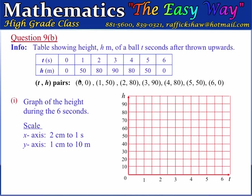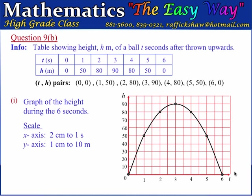From the table, our ordered pairs are: (0, 0), (1, 50), (2, 80), (3, 90), (4, 80), (5, 50), and (6, 0). These points are plotted on the graph at their respective positions, and then a smooth curve is drawn through all the points. That is our graph showing the height of the ball during the 6 seconds — a distance-time graph showing distance above the ground against time of flight.